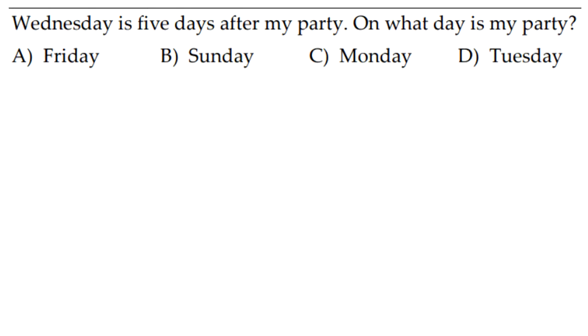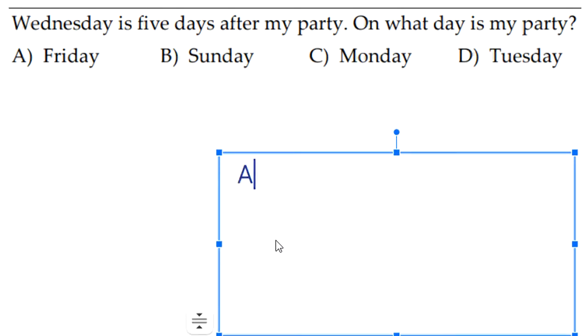Okay, so the first question: Wednesday is five days after my party, and what day is my party? So five days ago would be Tuesday, Monday, then Sunday, Saturday, then Friday. It would end on Friday, so our answer would be A, Friday.